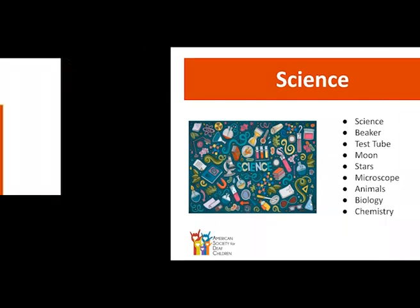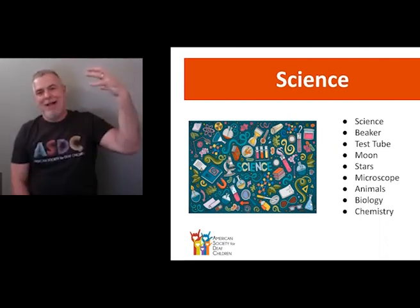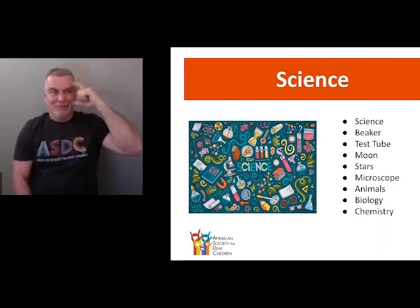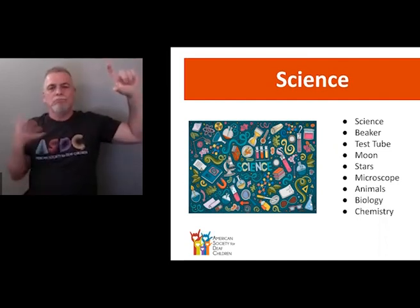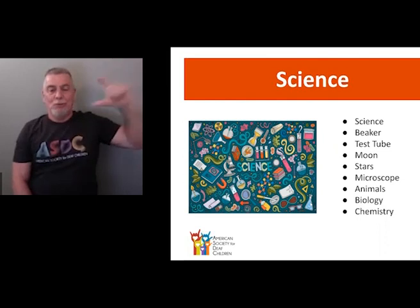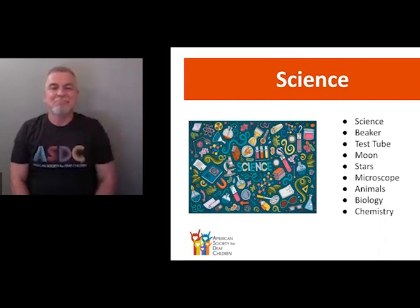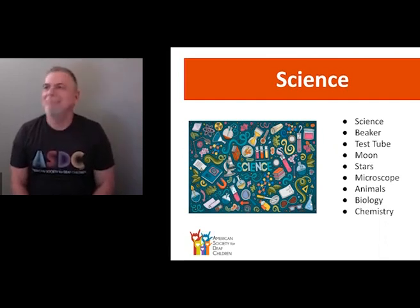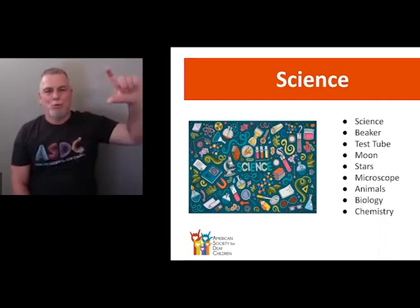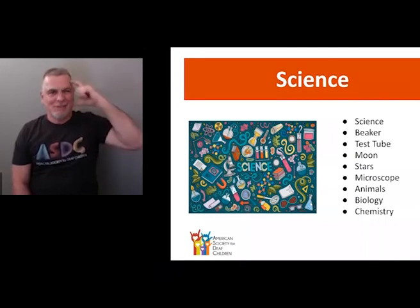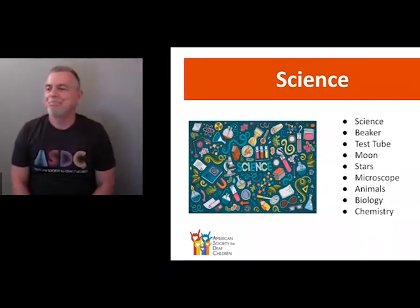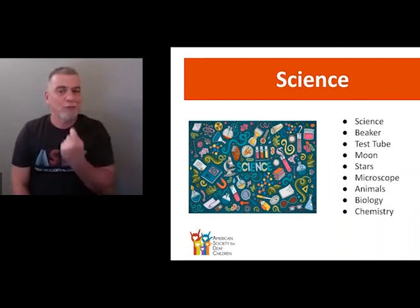Question: is there a difference between moon and sun? This is moon and this is sun. Moon is like this — and sun is like this because sun is larger. Good question.